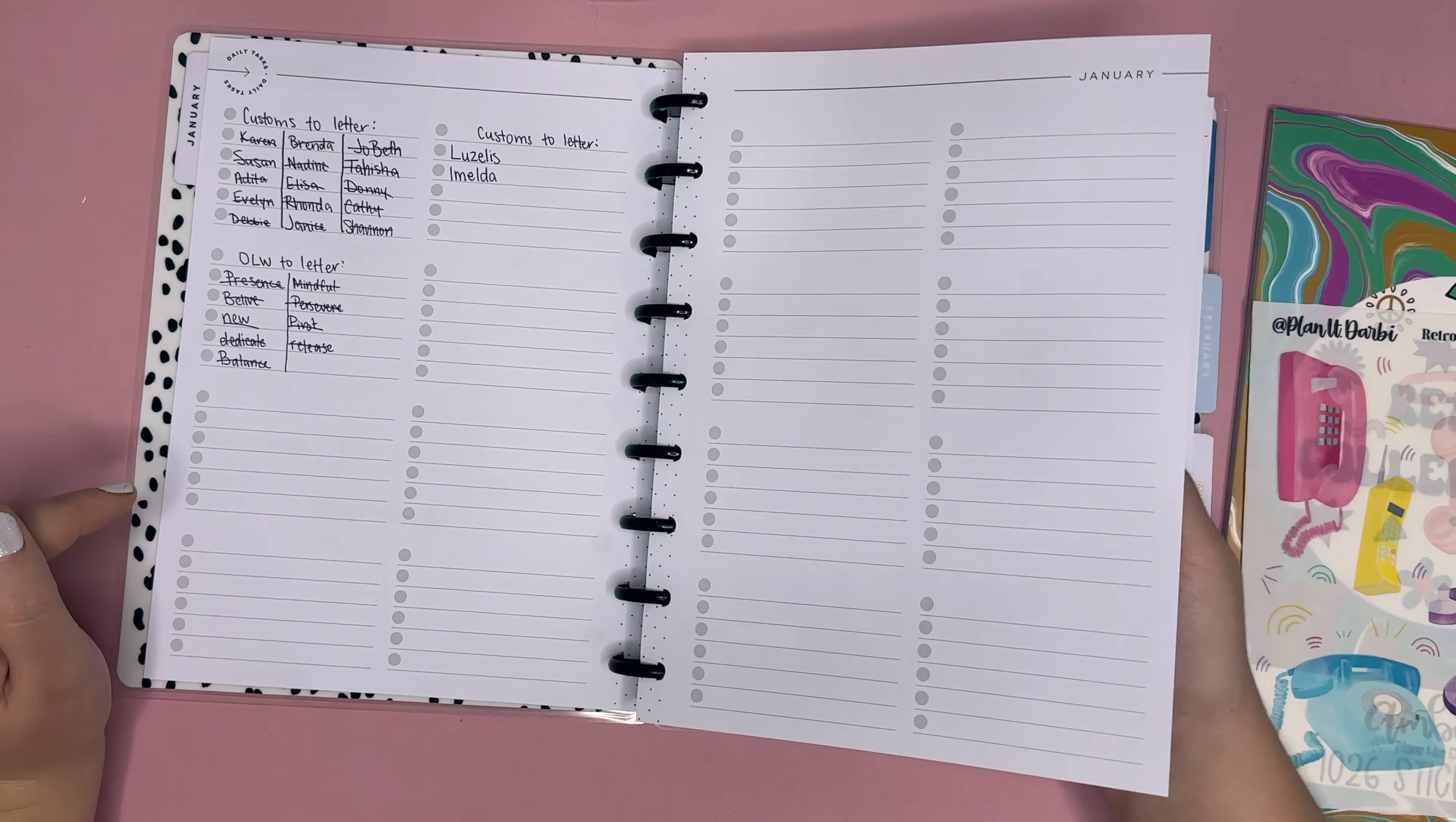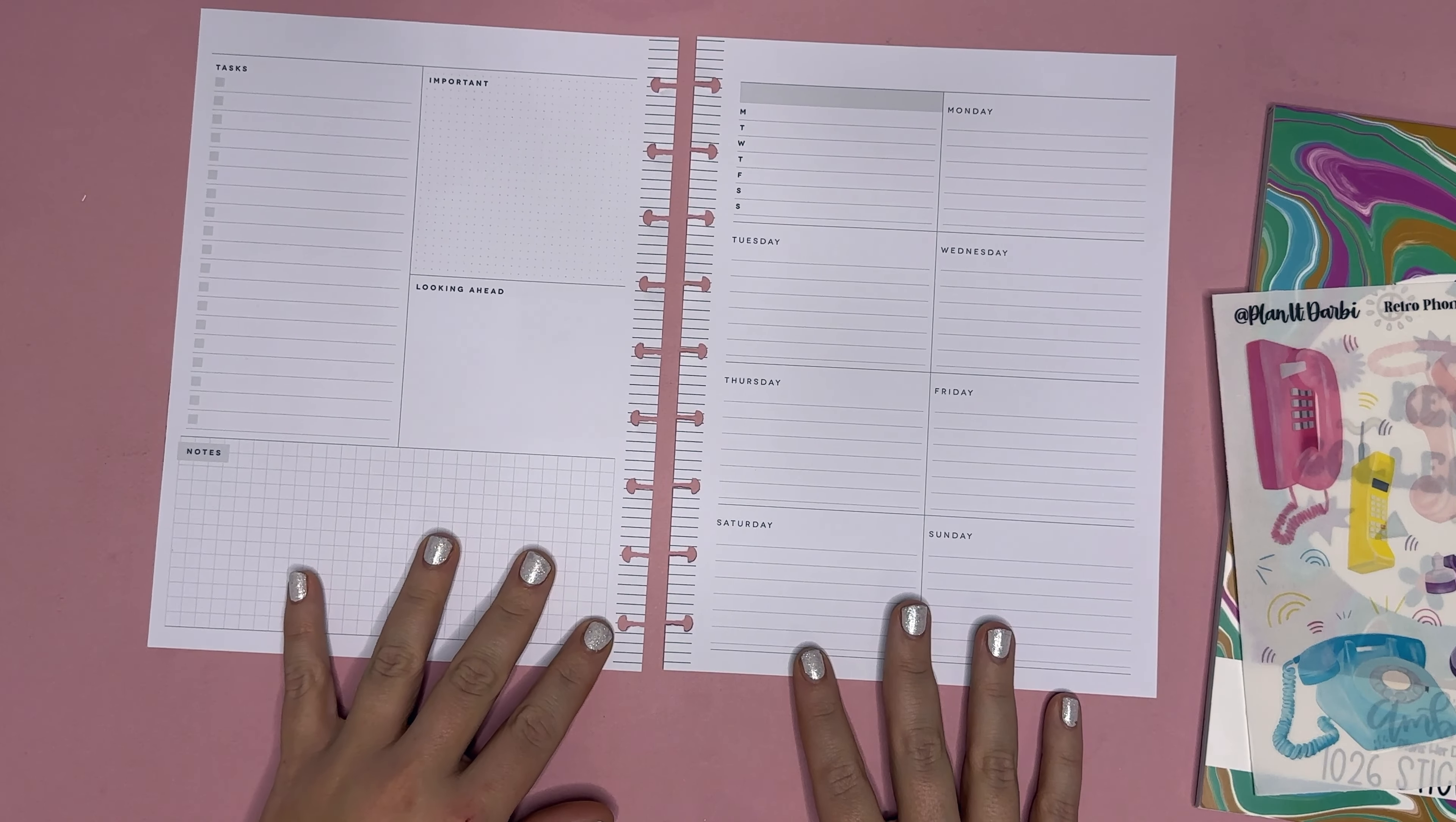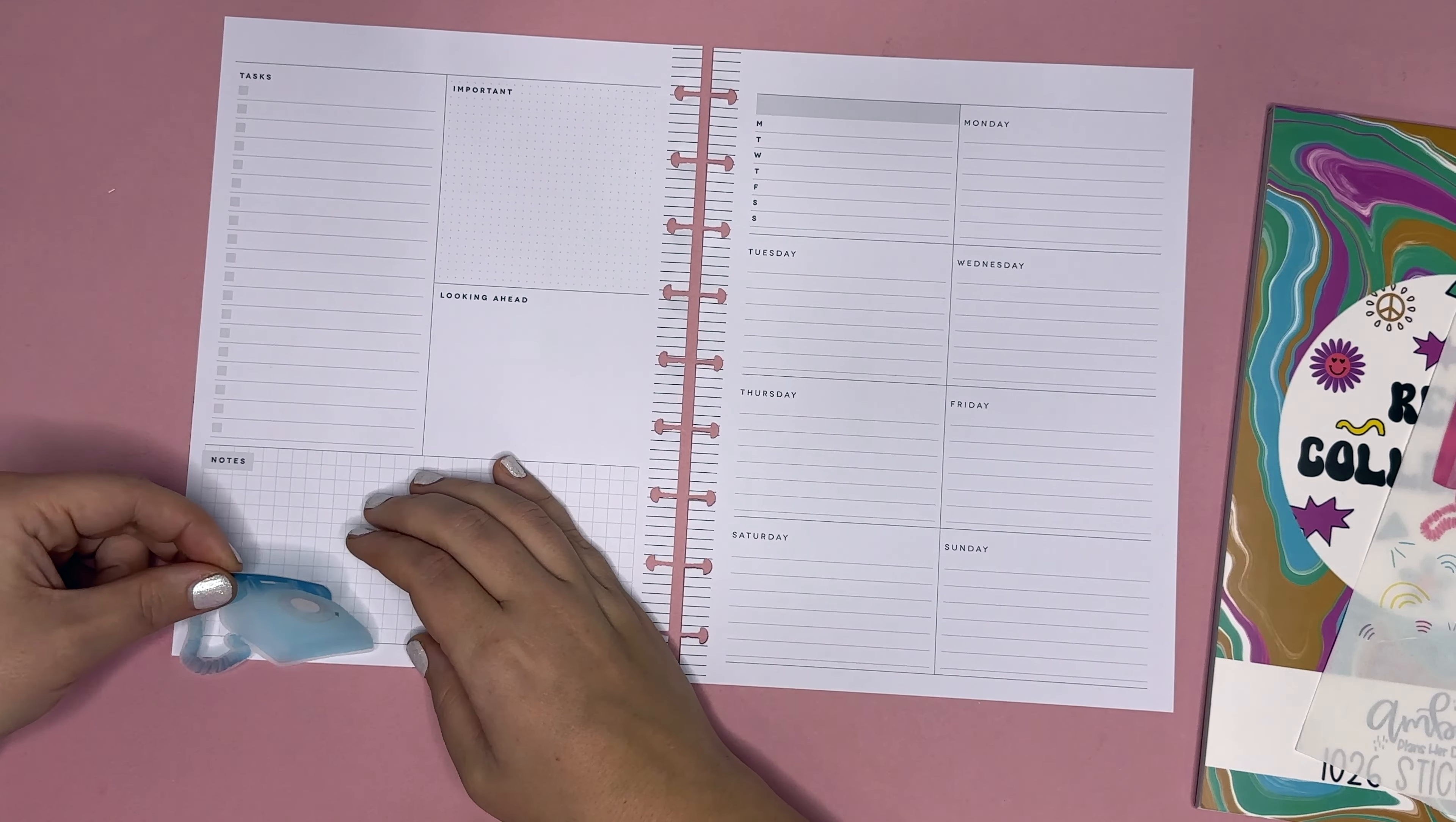So I still got time. I have my lists going with custom words and letters, custom word names, and one little word to letter. And then my first spread and now we're here. So we're gonna use Retro Collections because it makes the most sense since it's releasing on Friday the 6th, but I'm also going to combine it with Planet Darby's retro phones. I thought this would be so cute to combine retro collections with the retro phones. Now I do want to grab maybe some dating stickers but I may end up just using a pen or something.